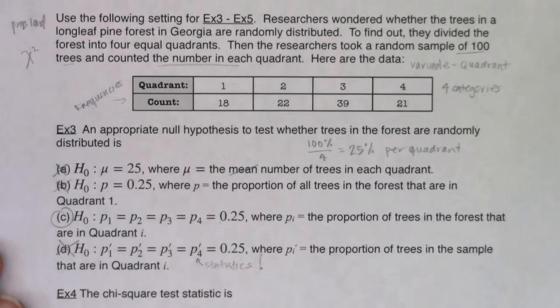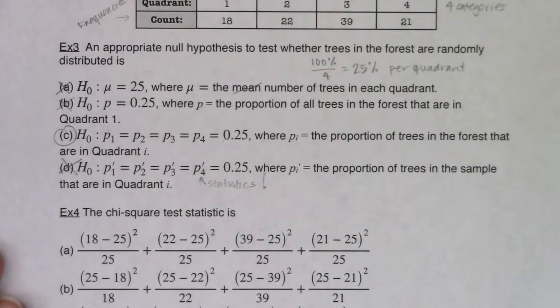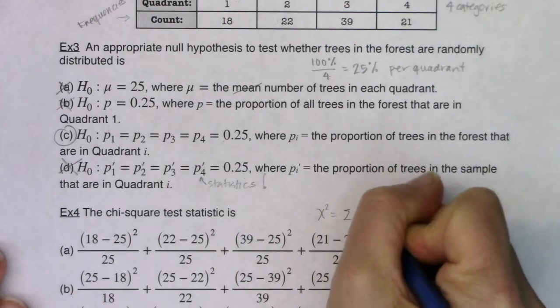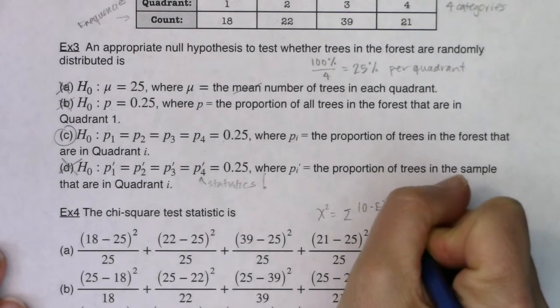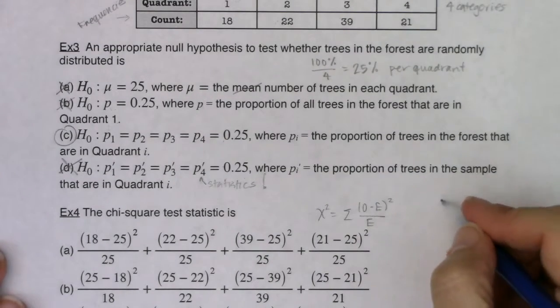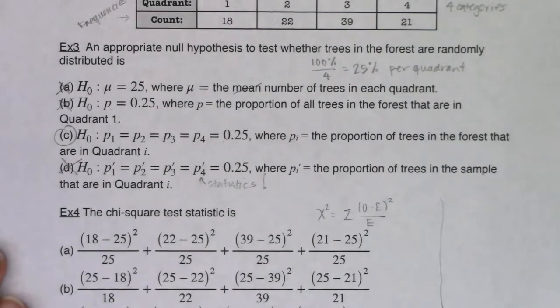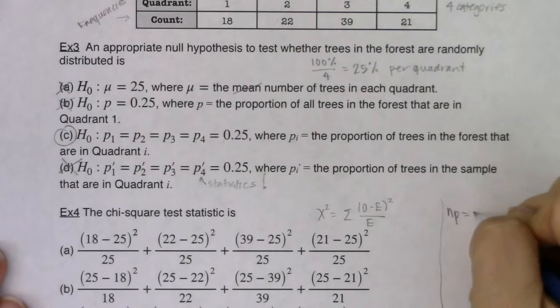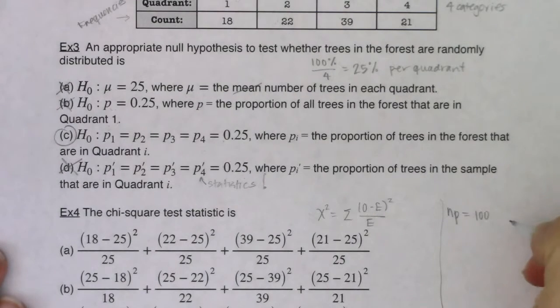Now it looks like they're going to ask us about our chi-squared test statistic. So if I want to do my chi-squared test statistic, we know that chi-squareds are always going to be the sum of the observed minus the expected squared over the expected. And if I want to calculate my expected, because again, I always give you the observes, you always have to calculate the expected. So we've got np, so I had a hundred trees. And I had 25% per quadrant, and that would give me 25 trees per quadrant.